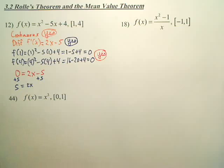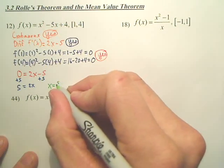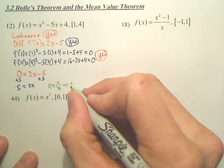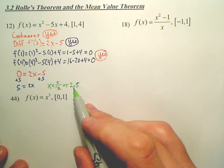And when I solve that, what are we going to get? x equals 5 over 2, which is 2.5. What does that mean? At 2.5, it has a slope of 0.